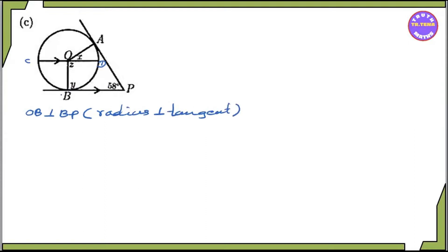OB is the radius, BBA is the tangent. Angle OBB is 90 degrees. That's why y is equal to 90 degrees.